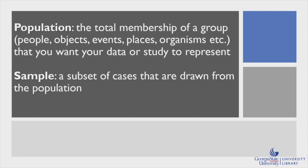The population becomes a pool from which the sample is drawn. Samples are always smaller than the population, making them easier to handle than trying to study the entire population. Sampling is also helpful when it comes to big data.